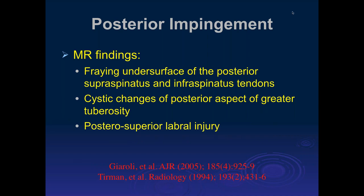We're talking about posterior impingement — pain in the posterior aspect of the joint. This disease process is pretty much limited to just high-level overhead throwers. The MR findings we see with this are fraying of the undersurface of the posterior supraspinatus and infraspinatus tendons, cystic changes in the posterior superior aspect of the greater tuberosity, and posterior superior labral tears.